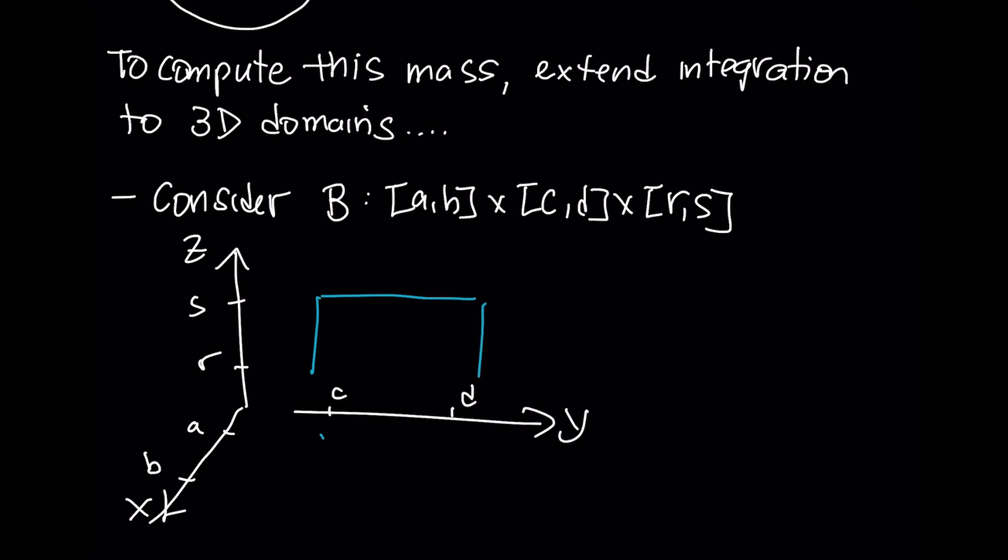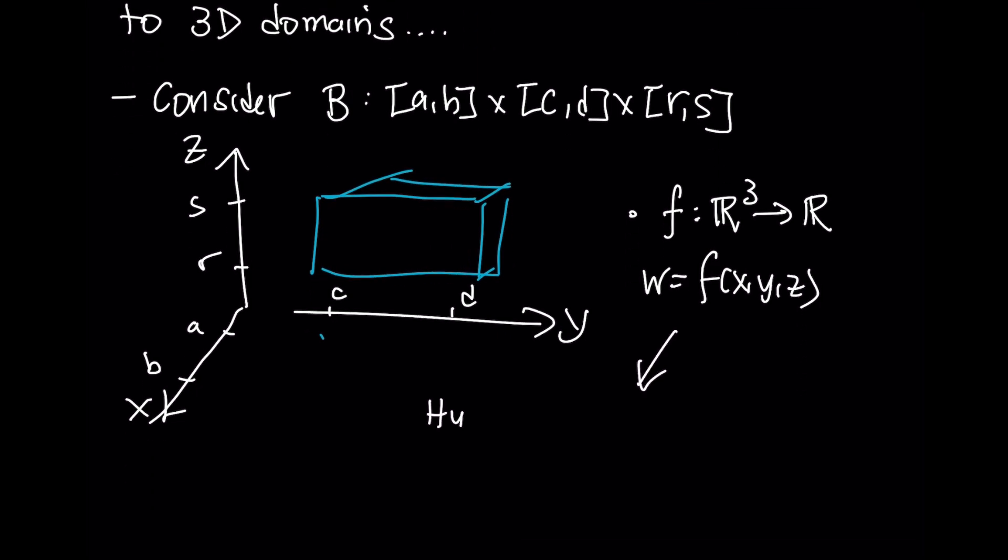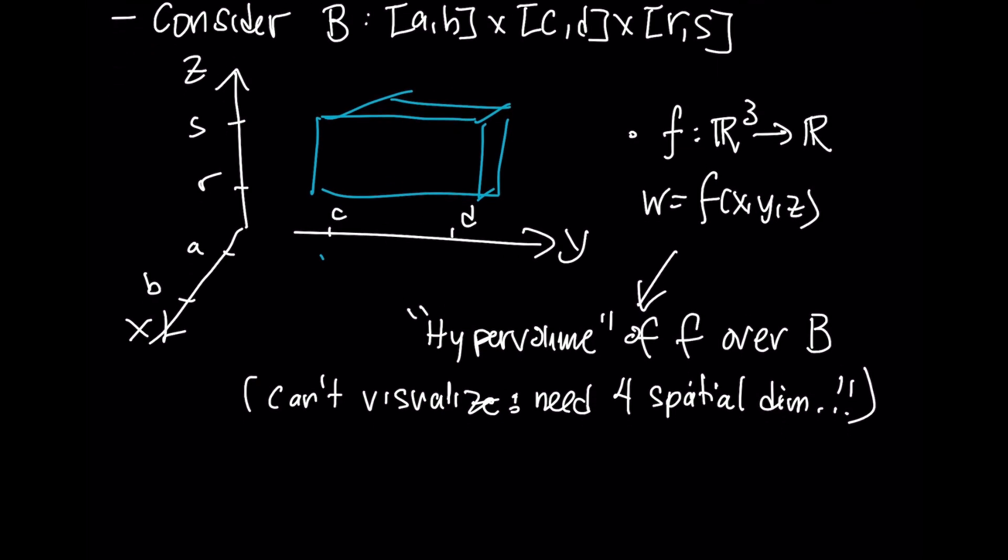We will end up having some sort of box that does the following. If we have a function f that's defined over some region in R3 and outputs a real number, what we are interested in is what we're going to call the hypervolume of the function over this region B. Now, we can't visualize this situation because we need four spatial dimensions to do so. We need three for the input domain and an extraspatial variable for the output domain. But nonetheless, the concepts we've developed for integration can still apply here almost directly.